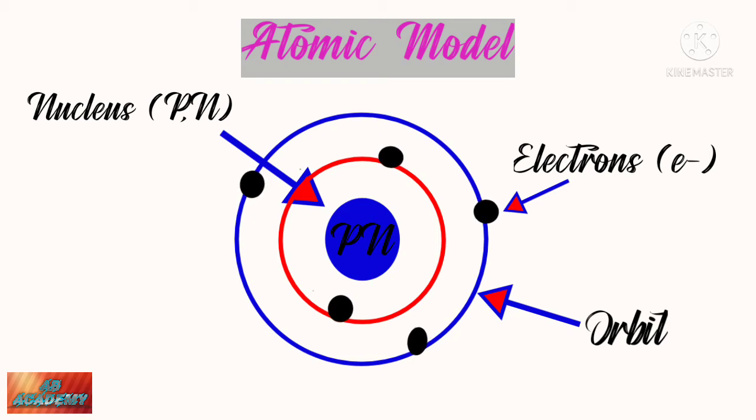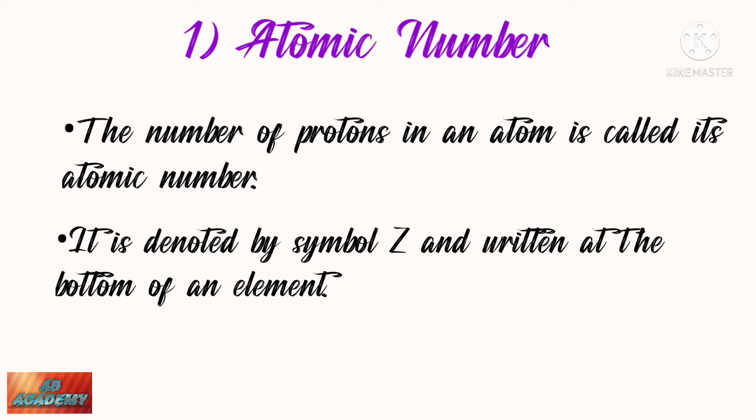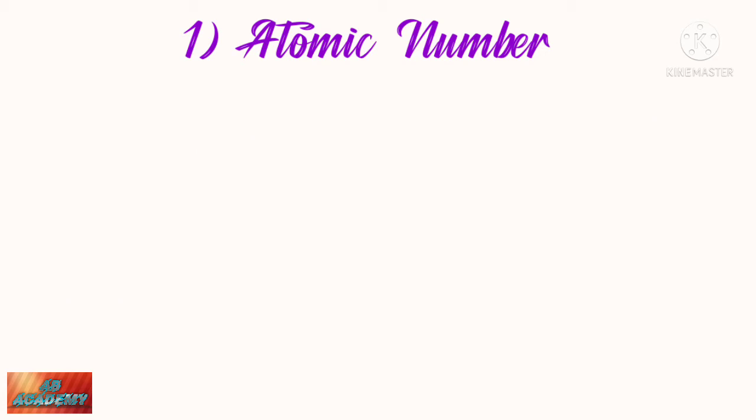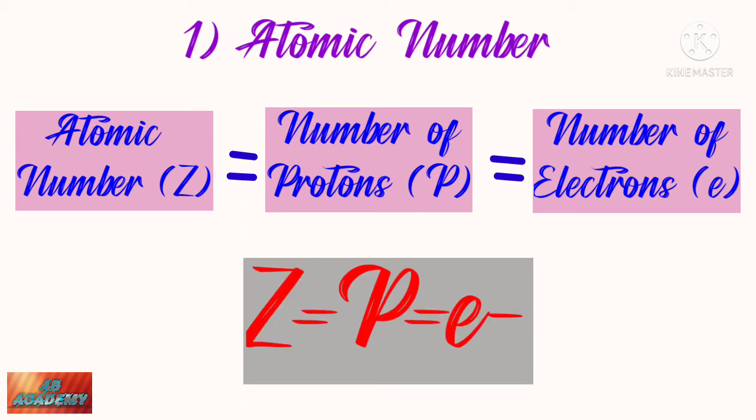On the basis of this atomic model we will learn what is atomic number and atomic mass. First, atomic number: the number of protons in an atom is called its atomic number. In other words, the number of electrons equal to the number of protons present in an atom is called atomic number. It is denoted by symbol Z and is always written at the bottom of an element. The formula is Z equals P equals e minus.